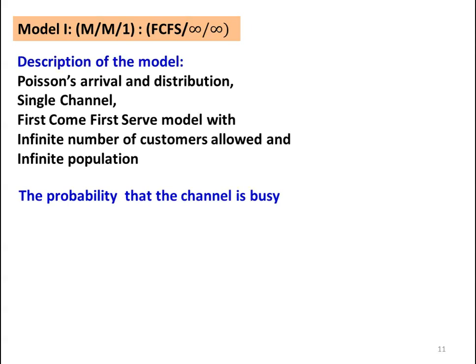Model number one is M/M/1 : FCFS/∞/∞. This means Poisson arrival distribution, Poisson service distribution, single channel, first come first served discipline, with infinite number of customers allowed and infinite population.